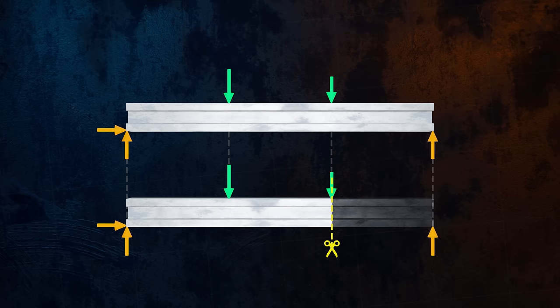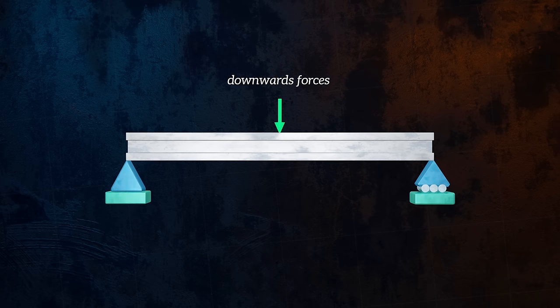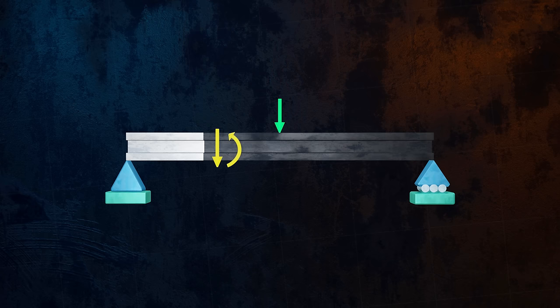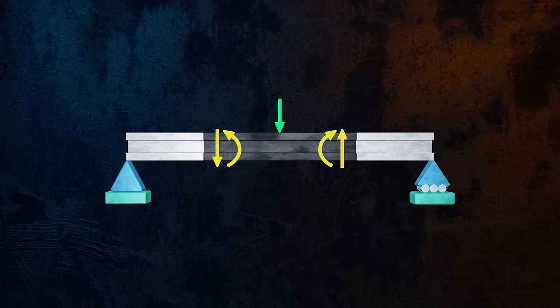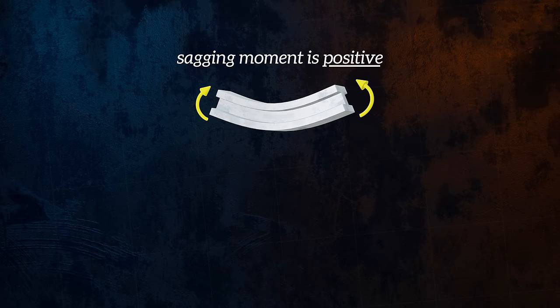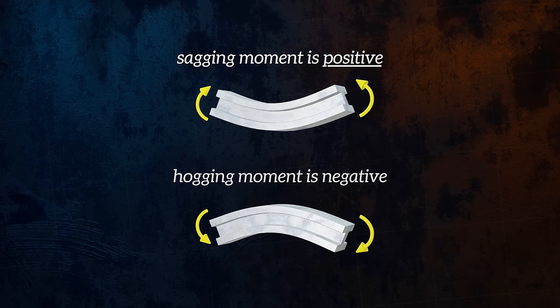Now is a good time to define the sign convention we will be using. Applied forces will be positive if they are acting in the downwards direction. For shear forces and bending moments, the positive sign convention will be as shown here. If the beam is on the left side of our cut, shear forces pointing downwards will be positive. If the beam is on the right side of our cut, shear forces pointing upwards will be positive. Positive bending moments will be those that put the lower section of the beam into tension. Another way to think about it is that bending moments which cause sagging of the beam are positive, and those that cause hogging of the beam are negative.